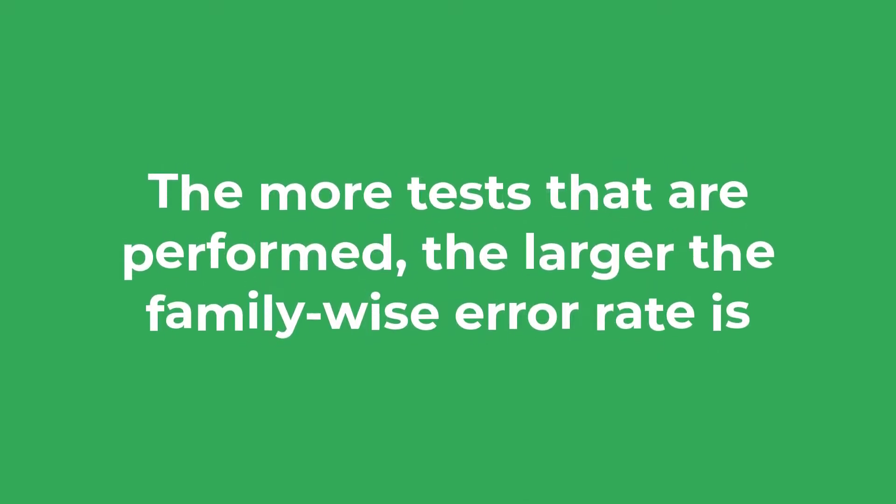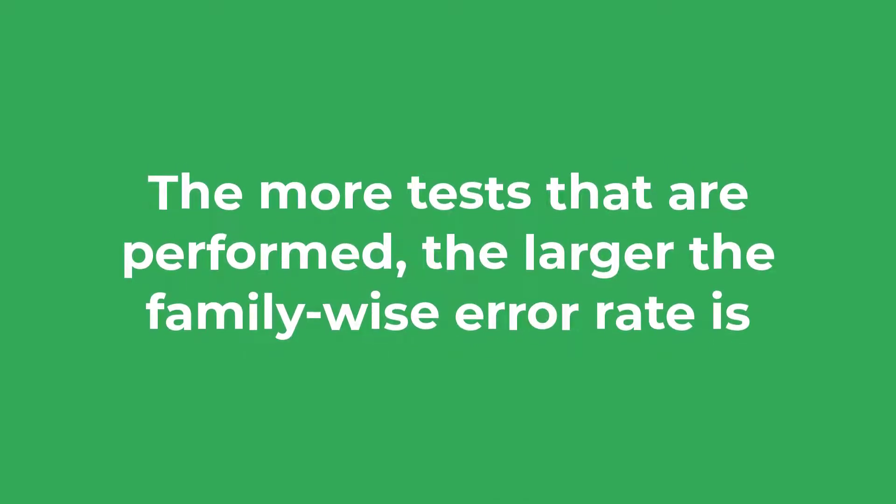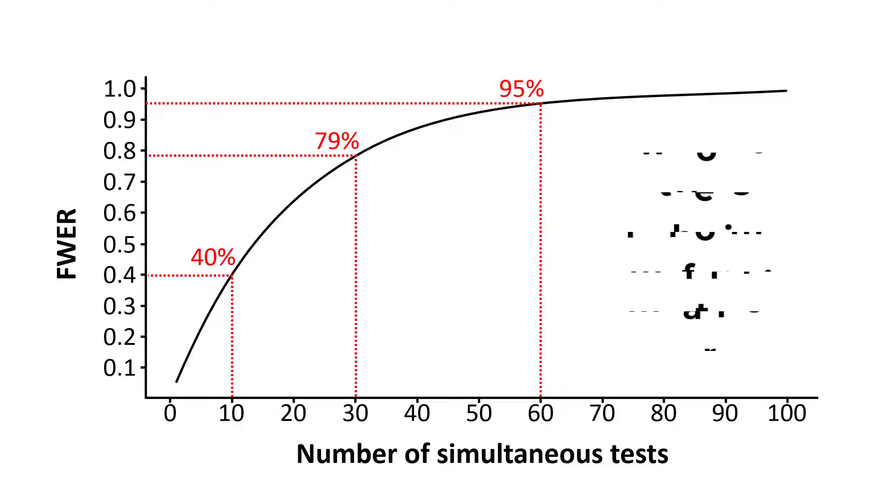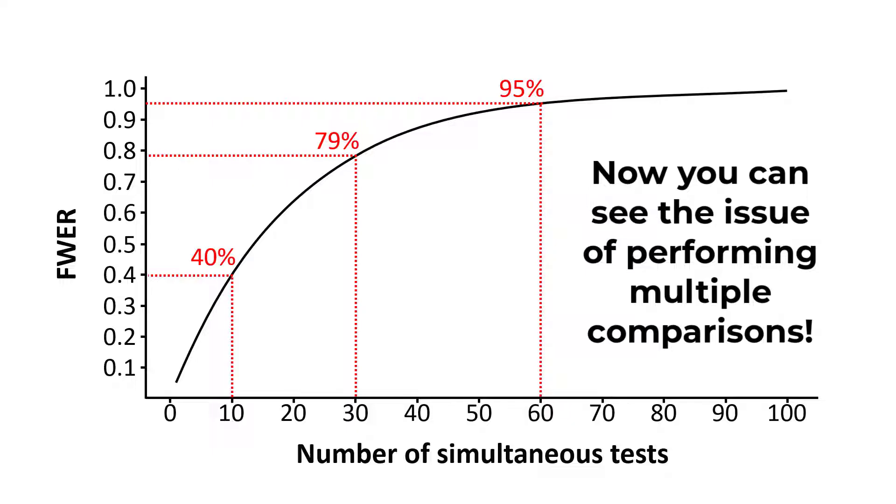The more tests that are performed the larger the family-wise error rate is. When using an alpha level of 0.05, performing 10 tests has a family-wise error rate of 40%, 30 tests give an error rate of 79%, and 60 tests gives an error rate of 95%. So now you can see the issue of performing multiple comparisons.